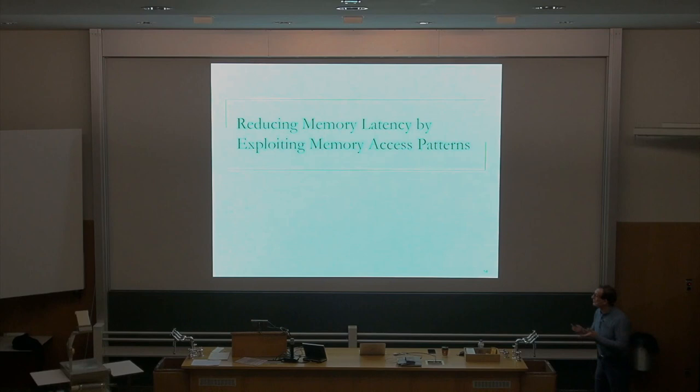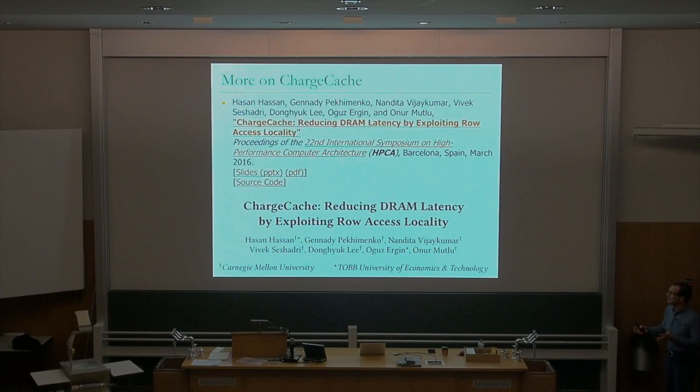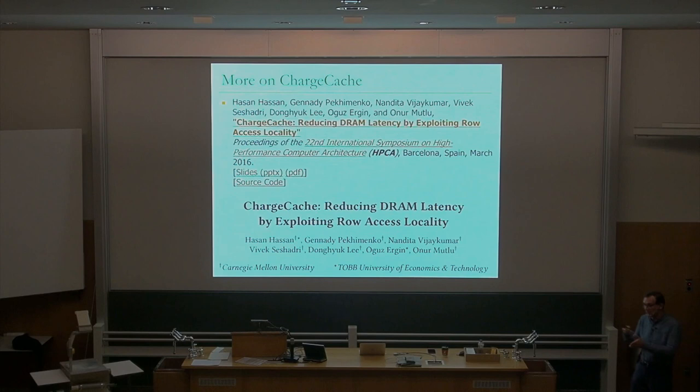There are other ways of reducing memory latency. One is exploiting memory access patterns — you already heard about this from Hassan: the idea of charge cache. If your access patterns are such that you recently activated a row and need to activate it again, you can take advantage of that to reduce the activation latency the second time. It's not possible on existing DRAM chips today because of self-timing, but you can do it going forward.